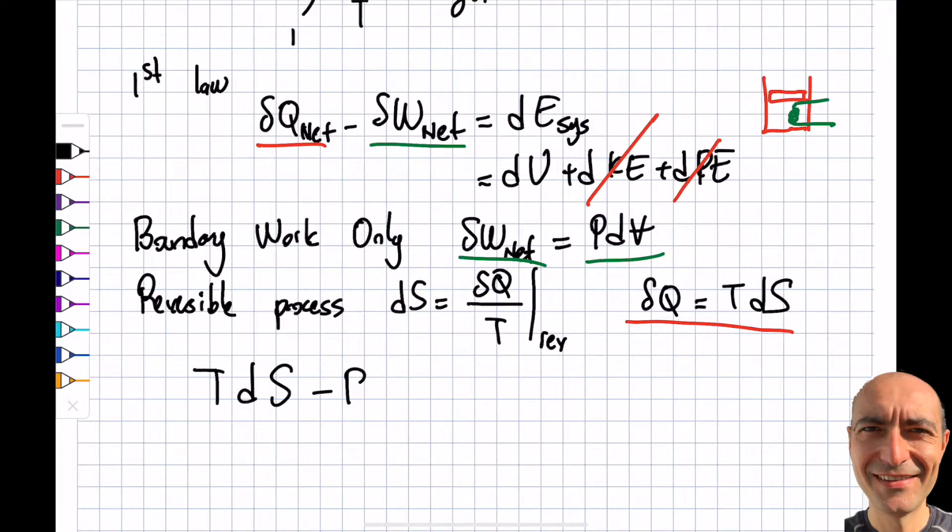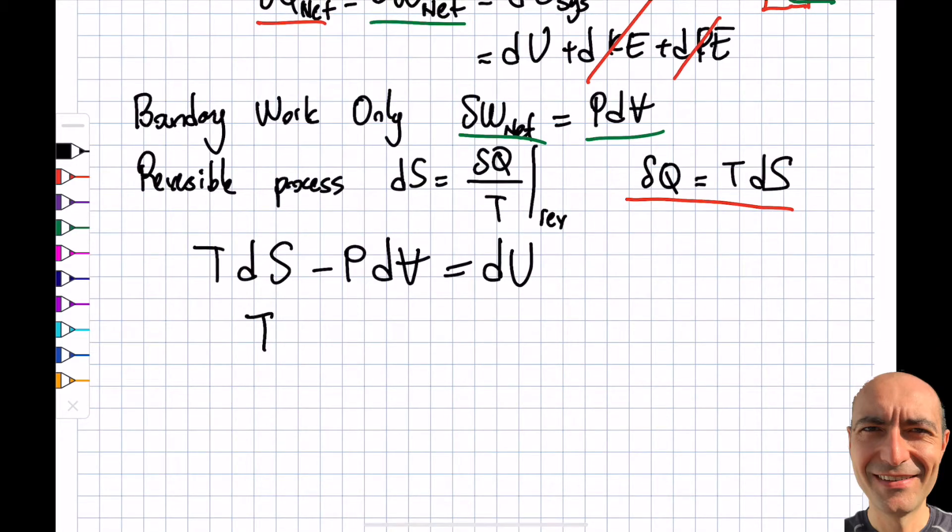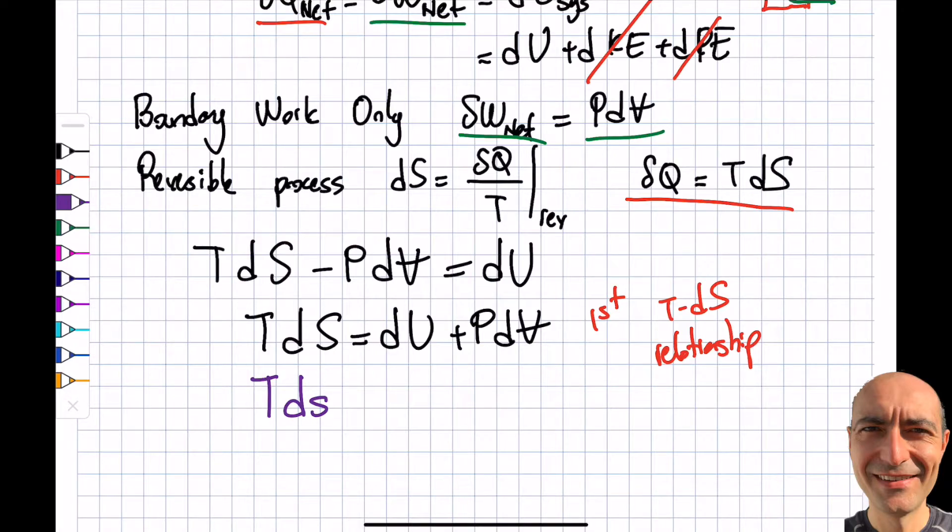Let's get to business: TdS minus PdV is equal to dU. As the name of this particular segment is TdS relationship, so dU—and this is a capital V as well—plus PdV. This is known as the first TdS relationship. Personally, I write this per unit mass. If I look at tables, the lower case s is specific entropy. Internal energy, we call this specific internal energy times PdV. These two are known as the first TdS relationship.